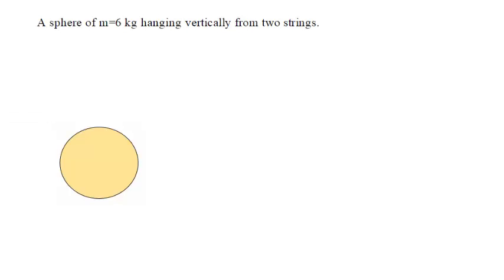A sphere with a mass of 6 kilograms is hanging vertically from two strings. We know this sphere has 6 kilograms, but in this case it's hanging from two different strings.